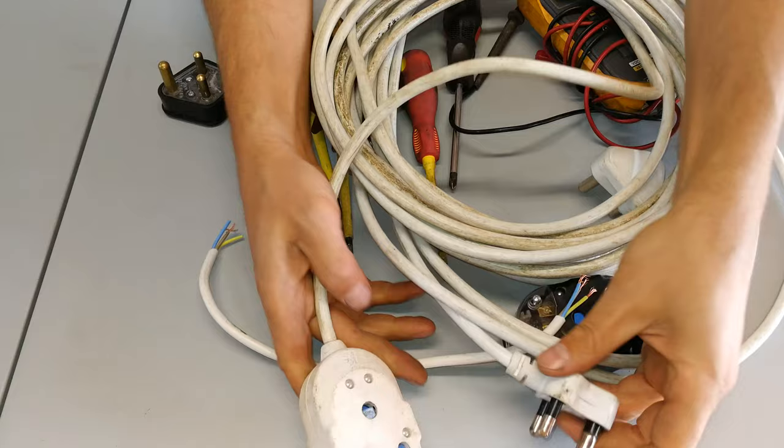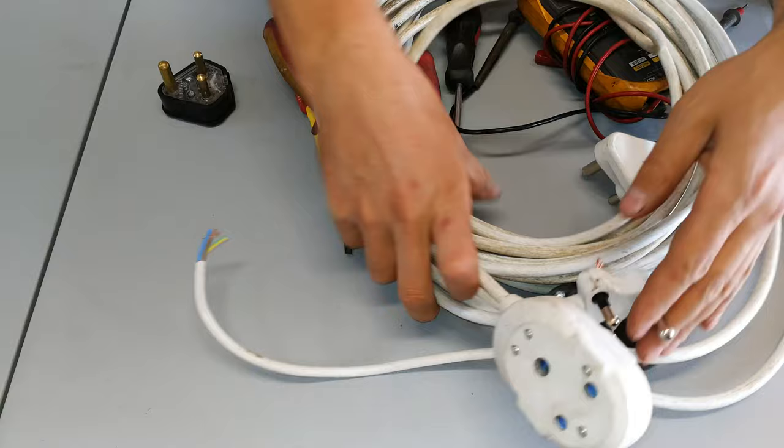When you buy an extension cord from the shop, you will find that it's already got the Janus coupler. There you go, there's one end of the extension cord and there's the other.